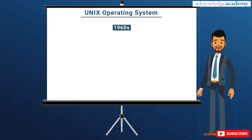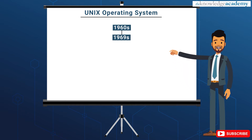However, Ken Thompson, who was a researcher at Bell Labs, got inspired by this and he decided to write a simple operating system by himself. In 1969, he wrote a simpler version of Multics on a PDP-7 in assembler and called this attempt Unix — Uniplexed Information and Computing System.